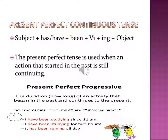Let us move on to the next subtype, that is Perfect Continuous Tense. Present Perfect Continuous Tense is used when an action that started in the past is still continuing, and the duration of the activity that began in the past and continues to the present is also expressed with time expressions like since, for, all day, all morning, all week, etc.